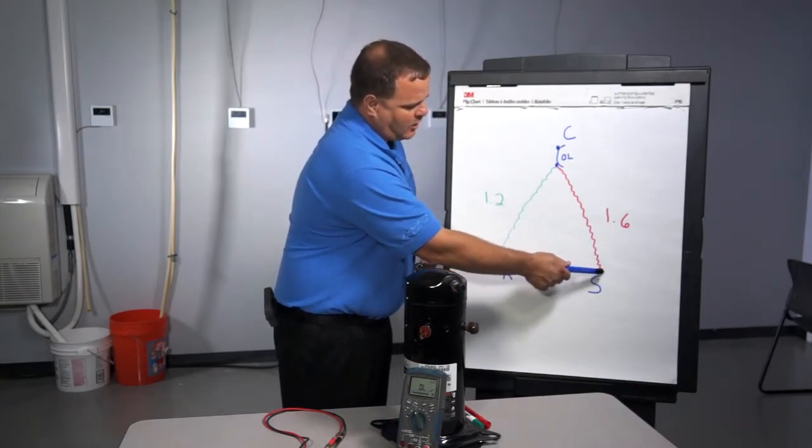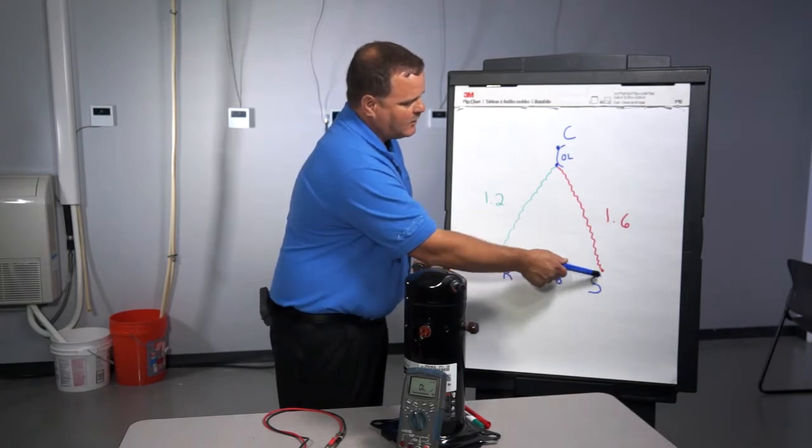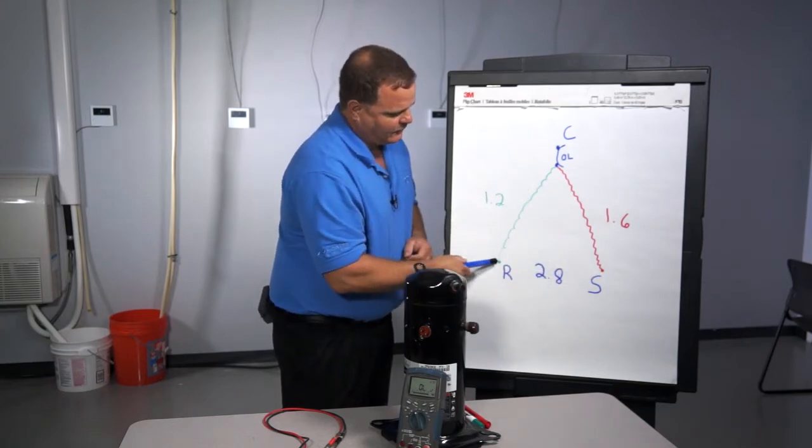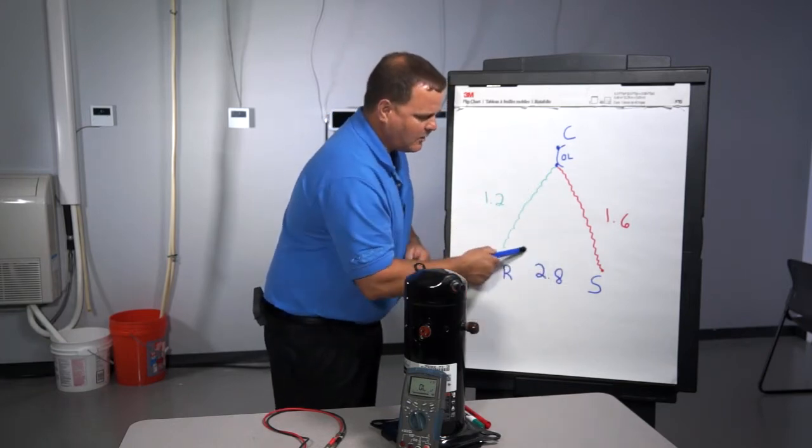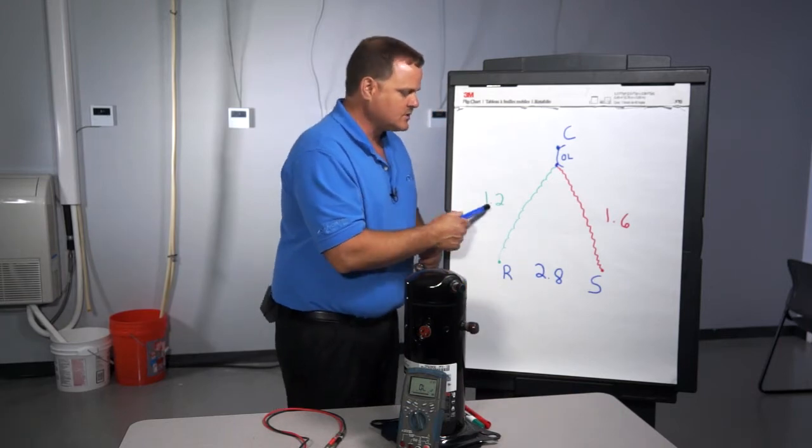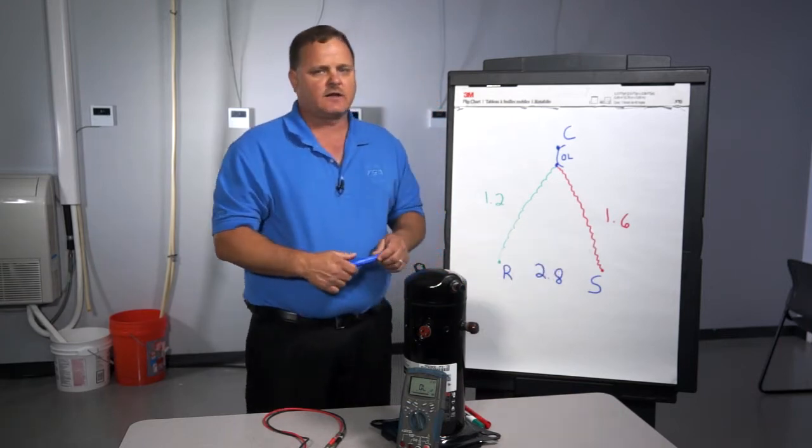And then if I measure from start to run with my meter leads, you can see I got an electrical path all the way through, and that's why you come up with 2.8 ohms, which is these two numbers added together.